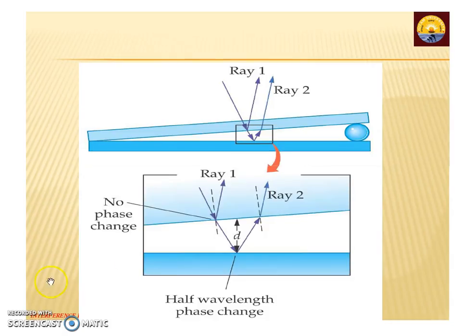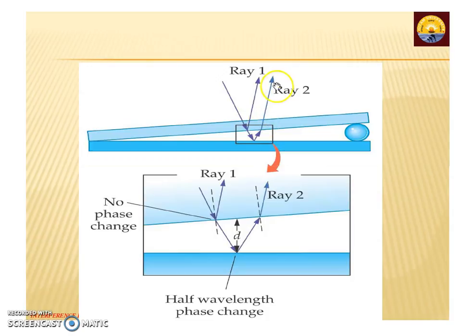Let us look at the schematic approach for the wedge-shaped film. The light rays incident get reflected and are transmitted into the thin film. Here at this point, it faces a 180-degree phase change, and the corresponding path difference is lambda by 2. One ray gets reflected, and the light ray coming from the thin film toward the denser medium goes toward the normal, while another goes away from the normal. Both these two rays get superimposed with each other and produce constructive and destructive interference.